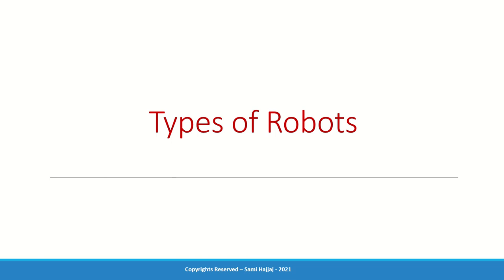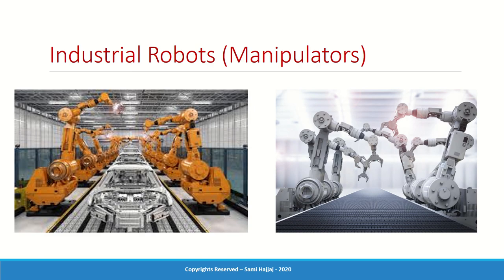The last part of this introductory session covers the types of robots. The first and oldest type is industrial robots, otherwise known as manipulators — used in factories. They're not always manipulators by the way; sometimes we have mobile industrial robots, but the majority — let's say 99% — of industrial robots are manipulators.